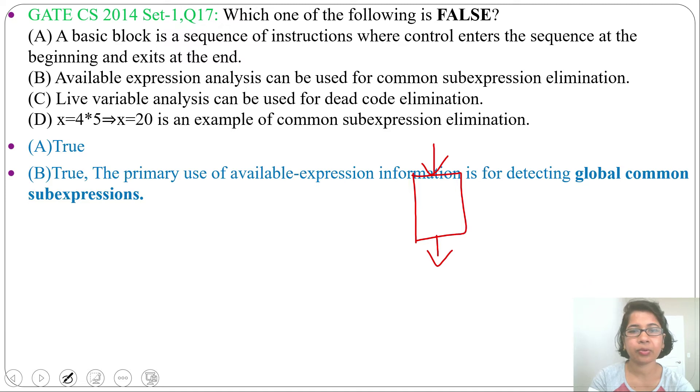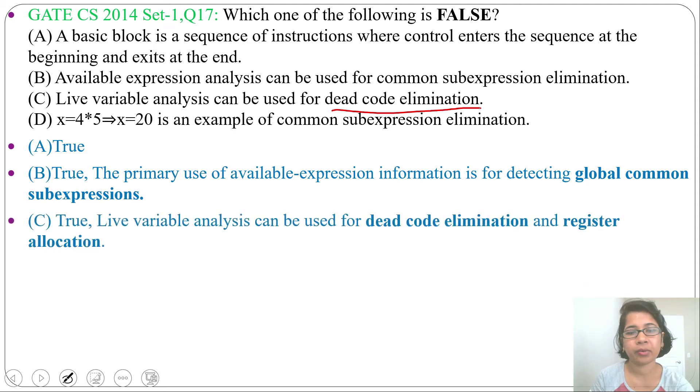Next, option C: Live variable analysis can be used for dead code elimination. This is true. Live variable analysis can be used for register allocation and dead code elimination. So option C is also true.